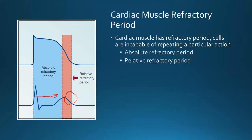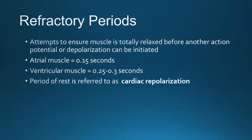During the relative refractory period, cells are very irritable. The R-on-T phenomenon means that if the cardiac cell during the relative refractory period receives a stimulus to contract, ventricular contraction occurs while it's still trying to rest — your R wave on your T wave. This can lead to very inefficient pumping and can lead to cardiac arrest. The heart attempts to ensure the muscle is totally relaxed before another action potential or depolarization can be initiated.